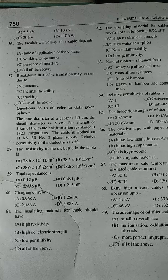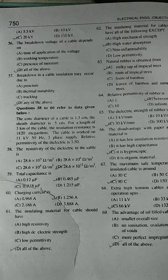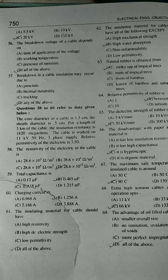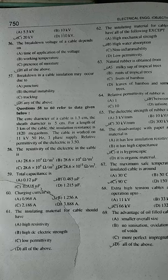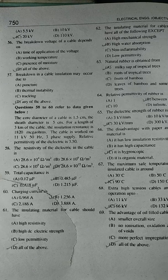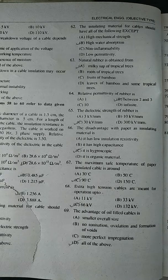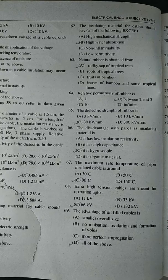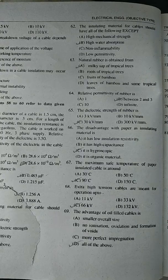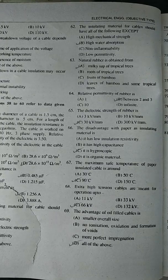61. The insulating material for a cable should have high resistivity, high DC electric strength, low permittivity — all of the above. 62. The insulating material for a cable should have all of the following except high water absorption. It must have high mechanical strength, non-inflammability, and low permittivity.